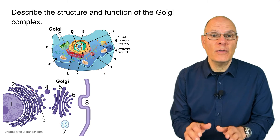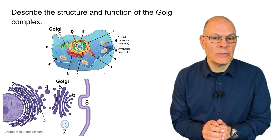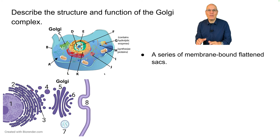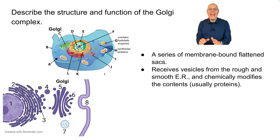The Golgi is a series of membrane-bound flattened sacs — and flattening increases surface area. The Golgi receives vesicles from the rough and smooth ER and chemically modifies their contents.